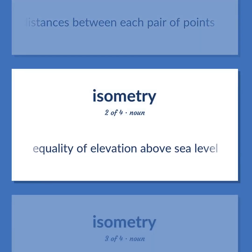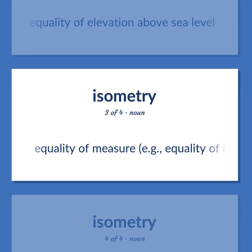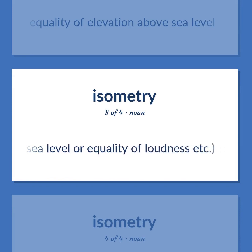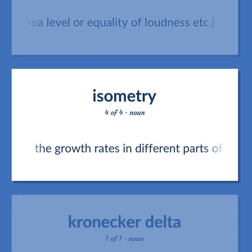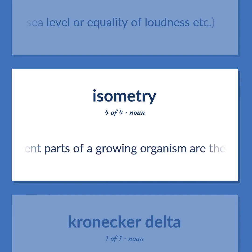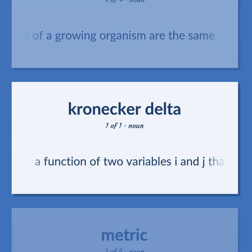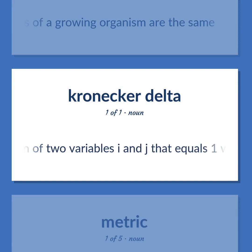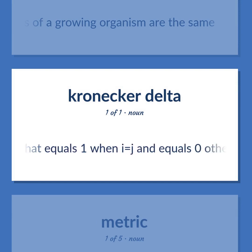Equality of elevation above sea level. Equality of measure — e.g., equality of height above sea level or equality of loudness. The growth rates in different parts of a growing organism are the same. A function of two variables i and j that equals 1 when i equals j and equals 0 otherwise.